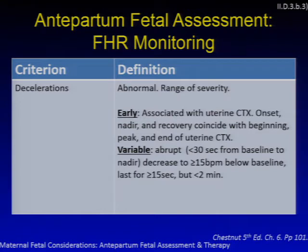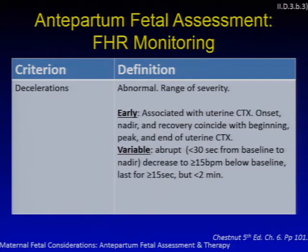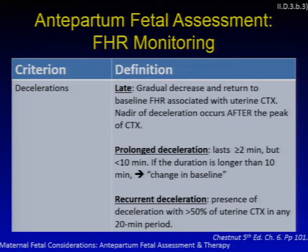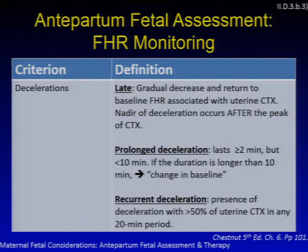At less than 32 weeks EGA, greater than 10 bpm for greater than 10 seconds but less than 2 minutes is desirable. If duration is longer than 10 minutes, this can be considered a change in baseline. Decelerations are almost universally abnormal, ranging in severity from early to variable to late. Early decelerations coincide with the beginning, peak, and end of a uterine contraction. Variable decelerations are abrupt decreases to 15 bpm below baseline lasting greater than 15 seconds but less than 2 minutes. Late decelerations are gradual with a nadir occurring after the peak of the contraction. A prolonged deceleration lasts more than 2 but less than 10 minutes. A recurrent deceleration is present with more than 50% of contractions in any 20-minute period.